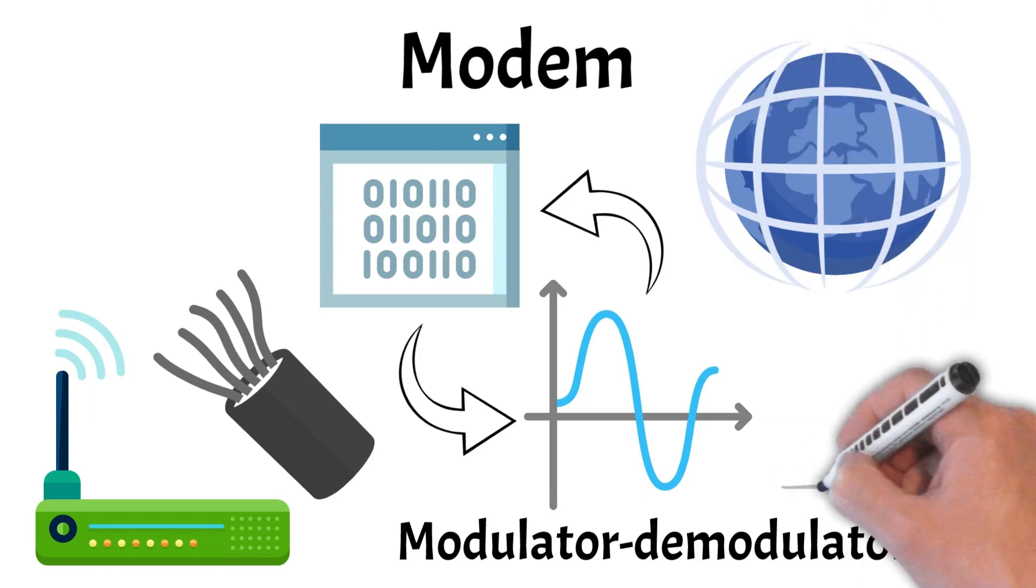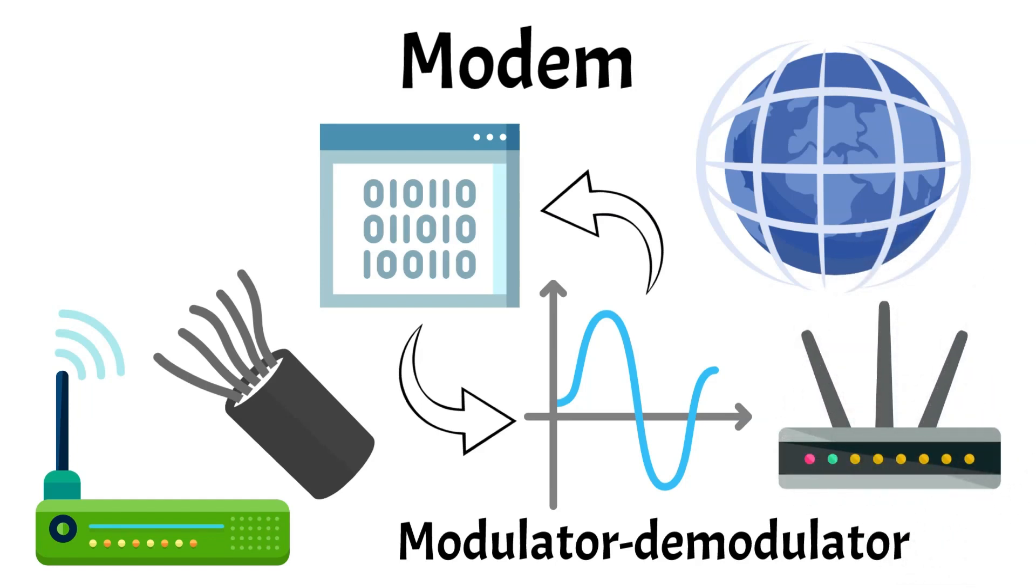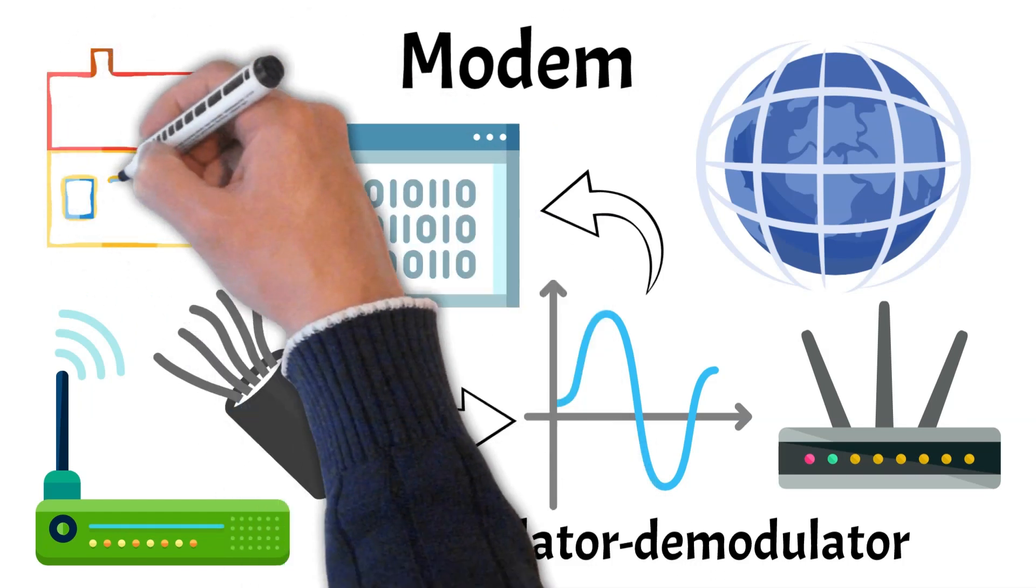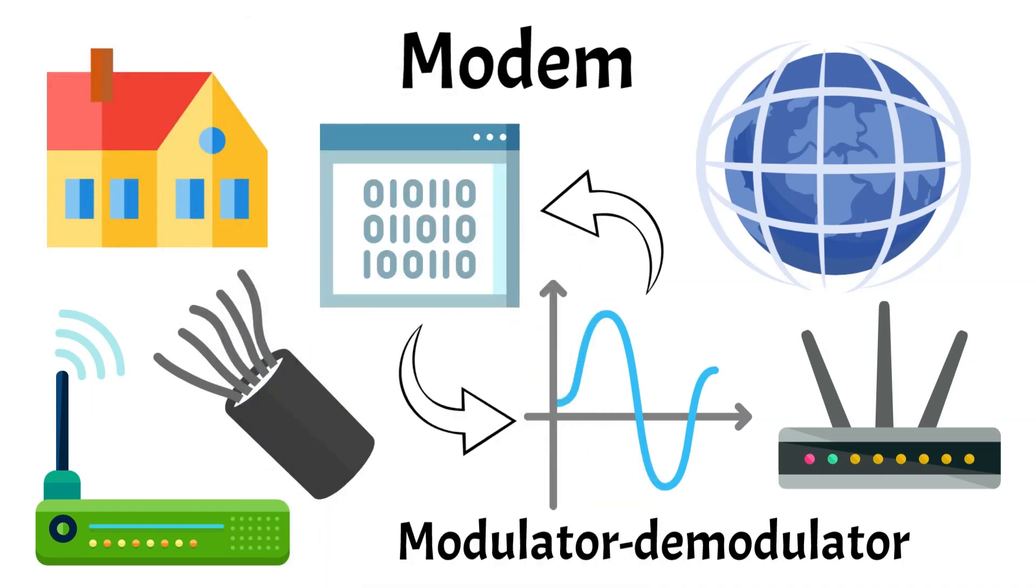In many modern setups, a modem-router combination device is used, combining the modem's ability to connect to the internet with the router's role of managing and directing data between devices within your local network. While stand-alone modems and routers offer more flexibility for configuration and upgrades, the combination device is a convenient all-in-one solution for many households.